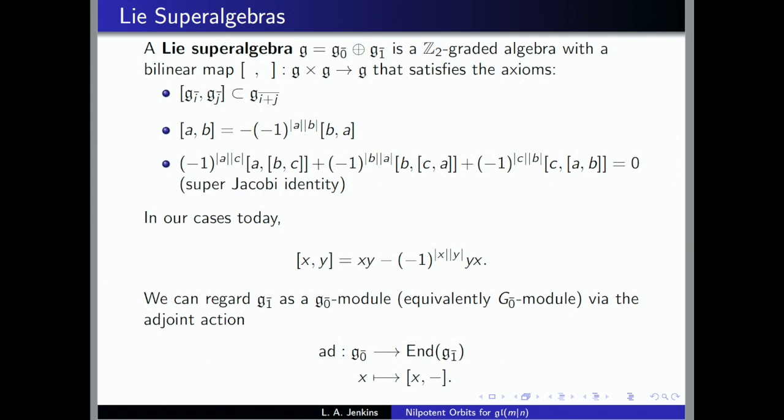You're free to think of the bracket as the analog of the commutator—it'll just be the super commutator: xy minus negative one to the product of the degrees of x and y times yx. We'll be focusing on the adjoint action, where I think of the odd part G1 in the grading as being a G0-module. So I have a map that goes from the even part G0, sending it to the map that's bracket with x, and I get an endomorphism on the odd part.